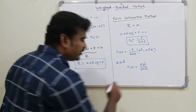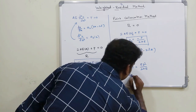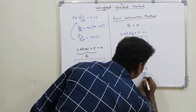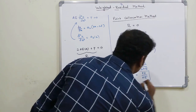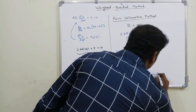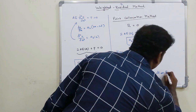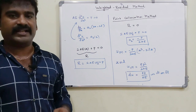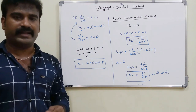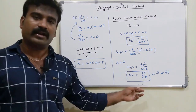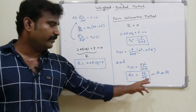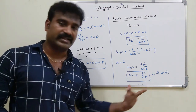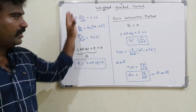Differentiating u(L) = pL²/(2AE) with respect to L gives du = pL/(AE). This is nothing but the elongation δL = pL/(AE) for a bar element. So the approximate solution from the Weighted Residual Method gives the correct elongation result.